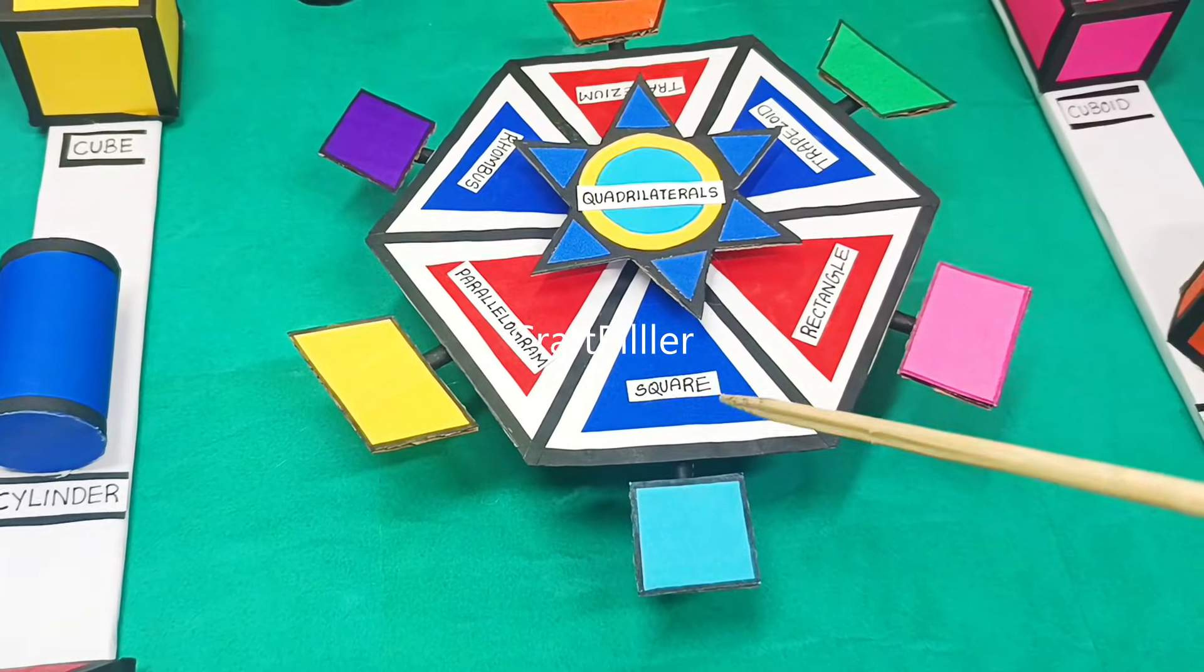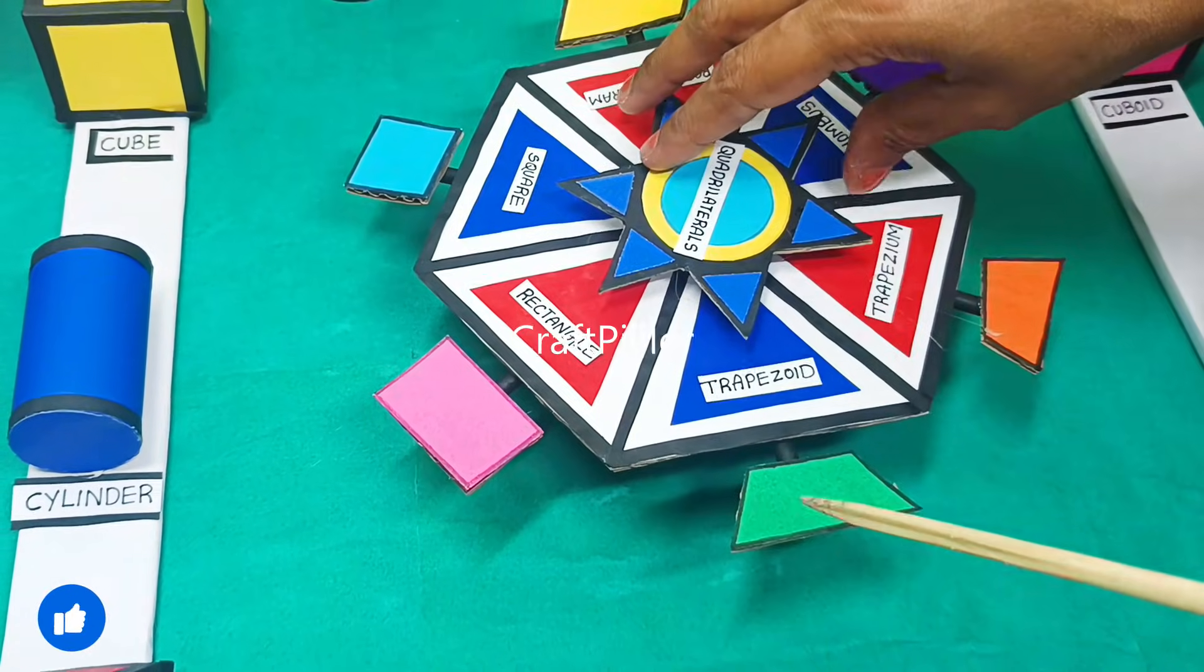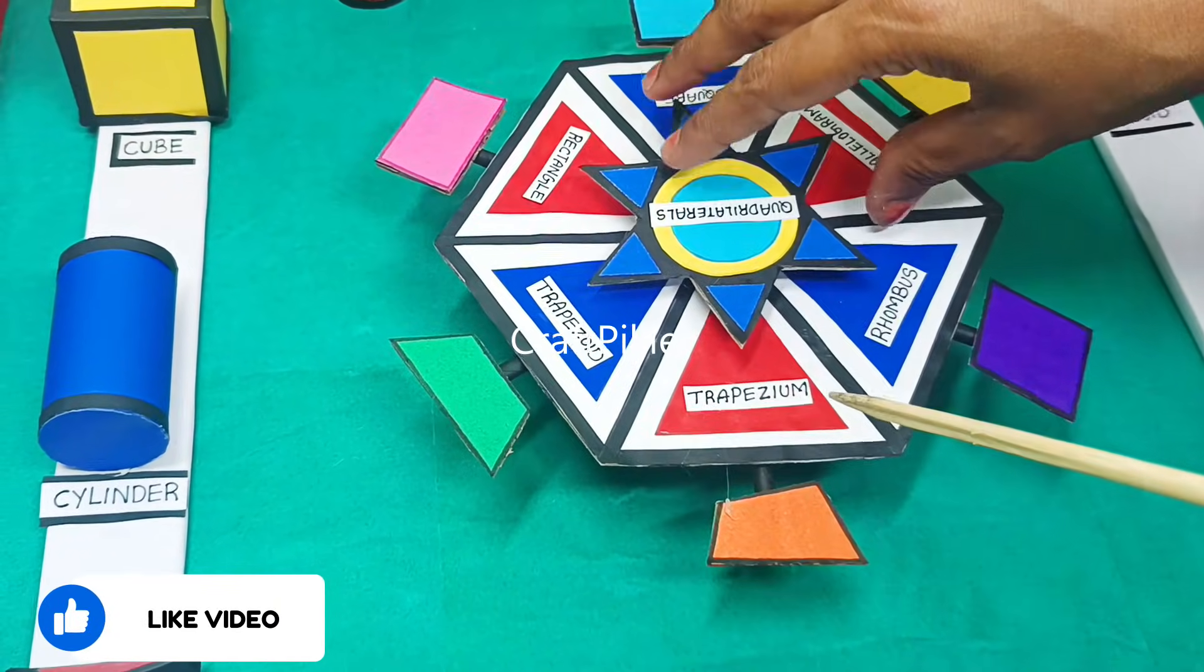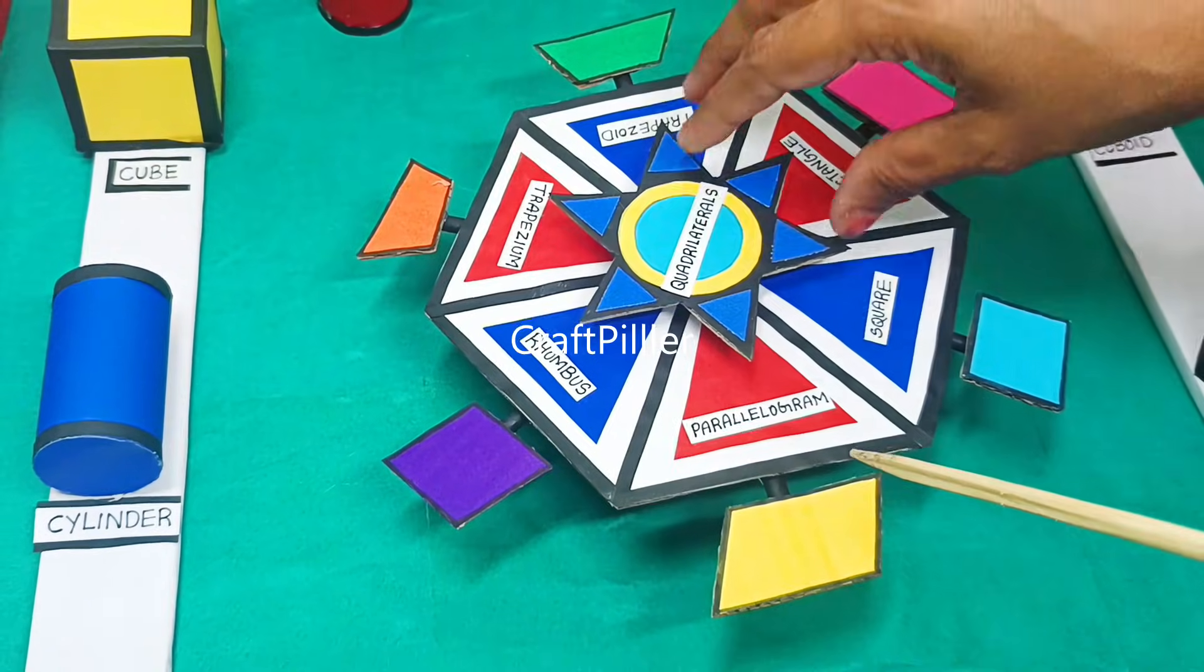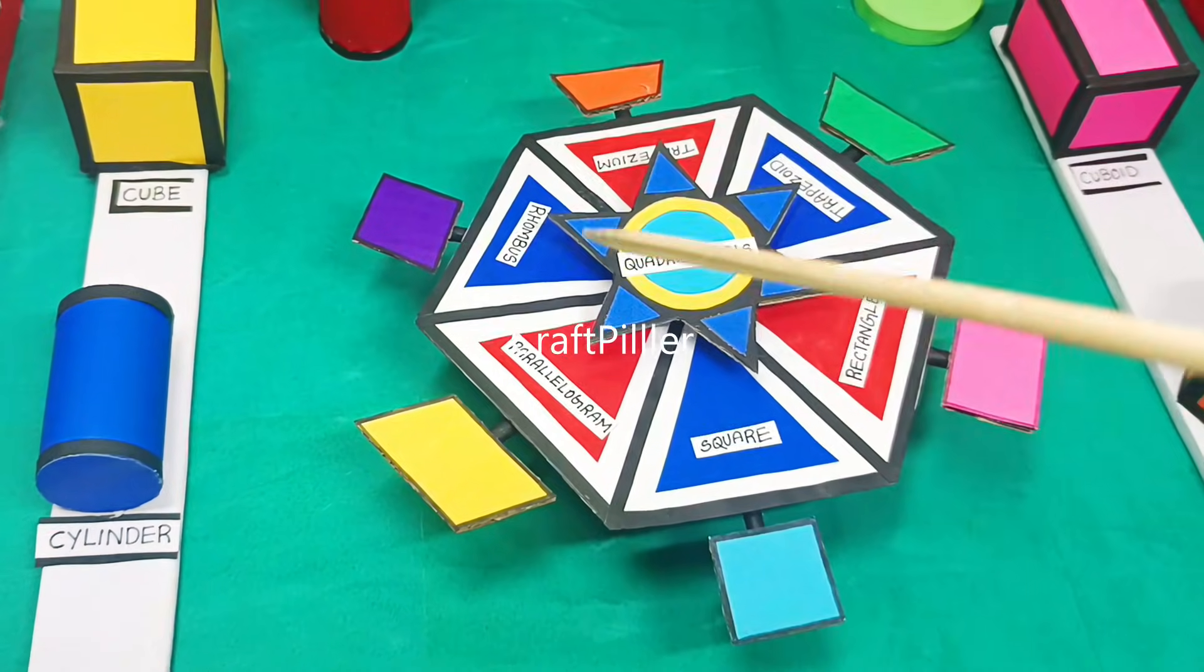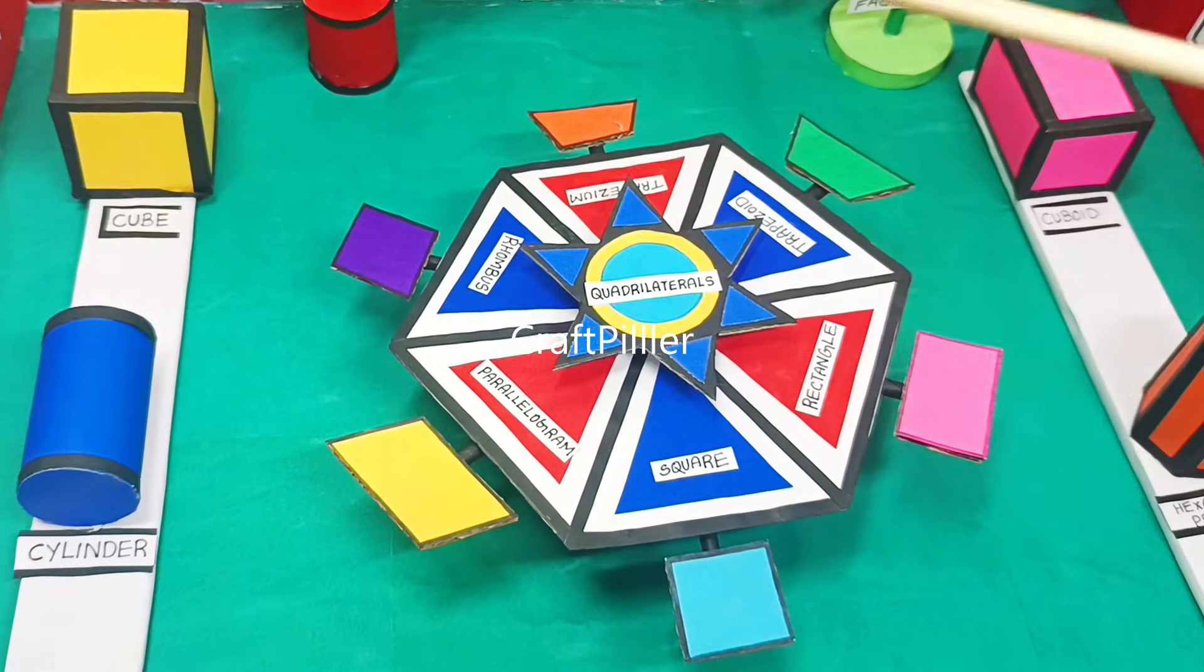One is square, we have rectangle, trapezoid, trapezium, rhombus, and parallelogram. These are the various quadrilateral shapes which are 2D shapes we have represented as types of quadrilaterals in this park.